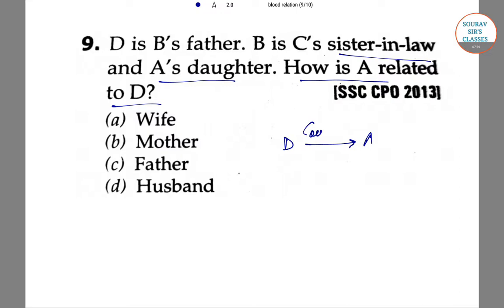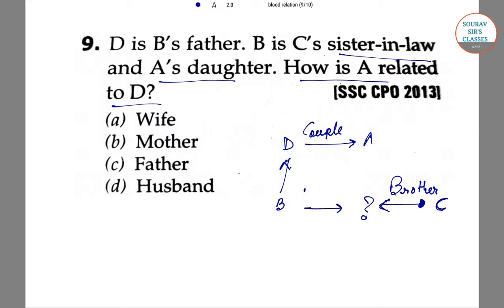B is the brother of C, and B is the couple of an unknown person. B and C are siblings, and they are a married couple with A. If they are a married couple, then A can be a wife. The family diagram shows an unknown person represented by a question mark.